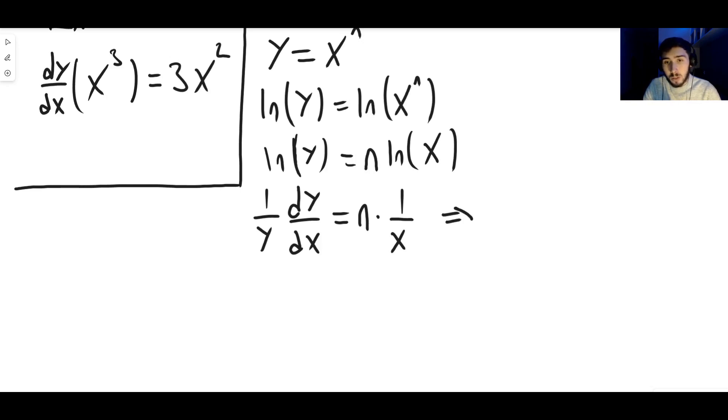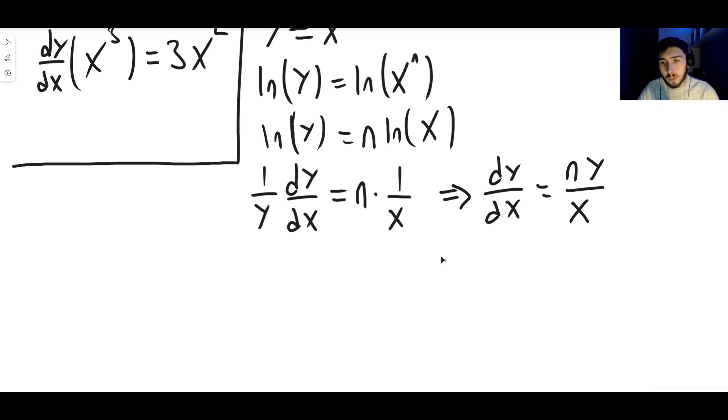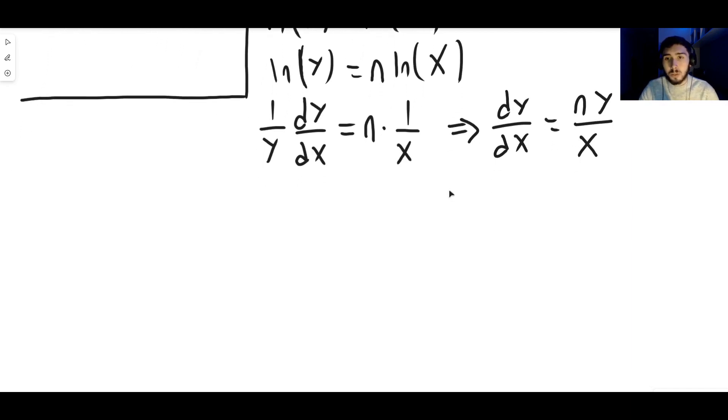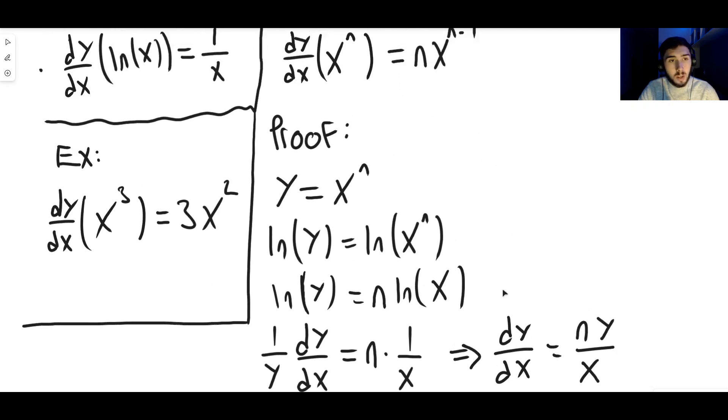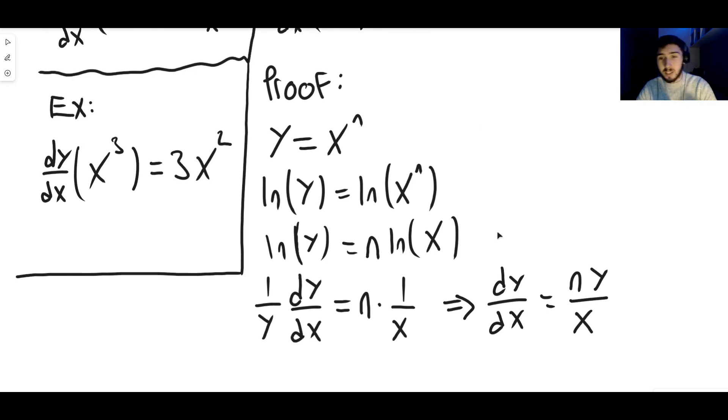And now we're going to times both sides by y to get dy dx on its own. dy dx is then equal to n times y over x, multiplying both sides by y. It kills the y on the left and it brings it up to the top on the right hand side. So dy dx equals n times y over x. And that's fine. You could also say, hey, we're done. We're finished. Amazing. There's the derivative.